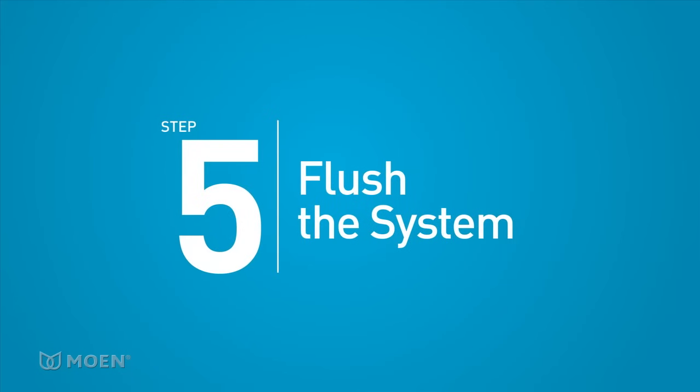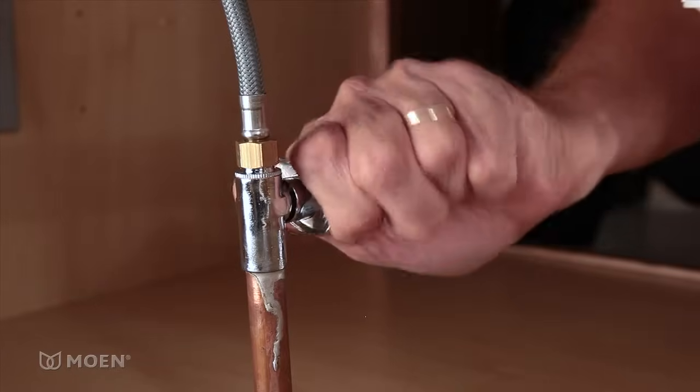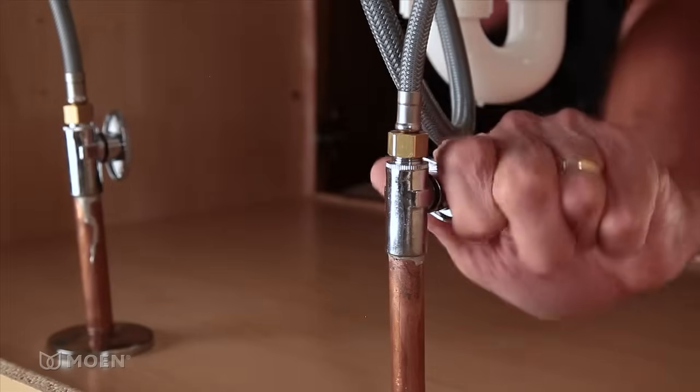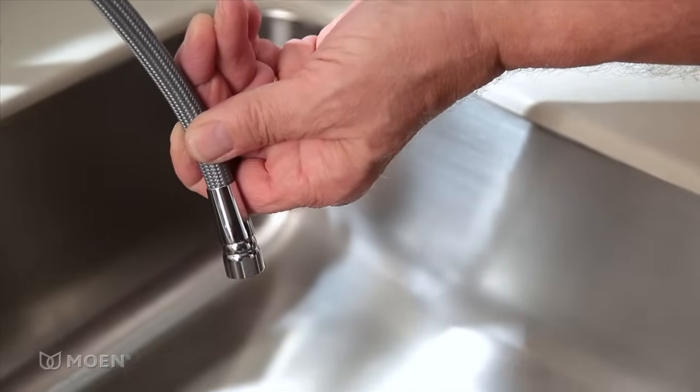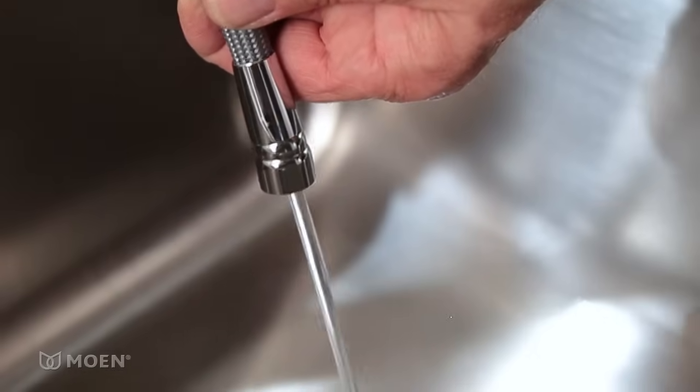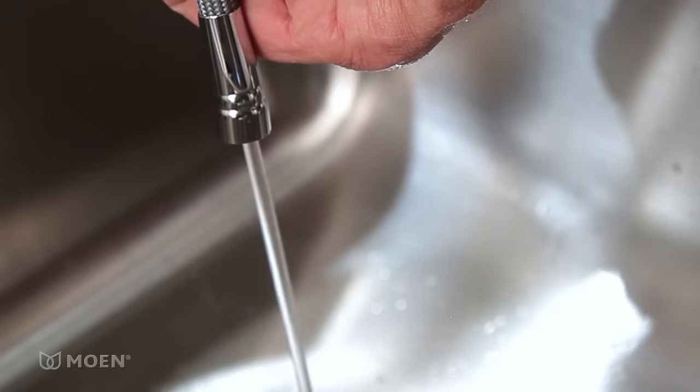Step 5. Flush the system to remove any debris. Make sure the faucet handle is in the off position. Turn the hot and cold water inlets back on. Position the pull-out hose into the sink and turn on the faucet. Let the water run for about 15 seconds. This will flush any dirt or debris that might be in the system.